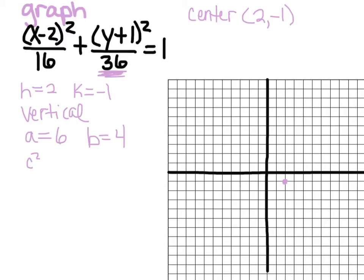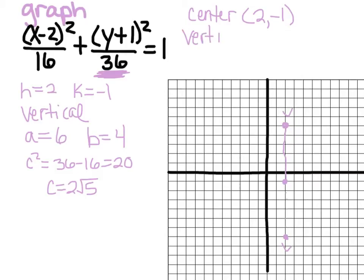C squared: we have the same 36 and 16 as in the first problem, so 36 minus 16 is 20 and C is 2 root 5. From our center, in the Y direction, we're going to go up and down 6 units — count 1, 2, 3, 4, 5, 6 and put a vertex up, then 1, 2, 3, 4, 5, 6 and put a vertex down. The vertex at the top is at (2, 5) and the vertex at the bottom is at (2, negative 7).